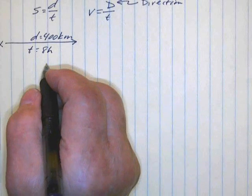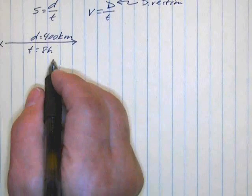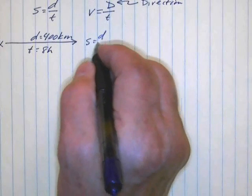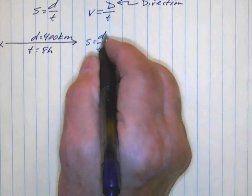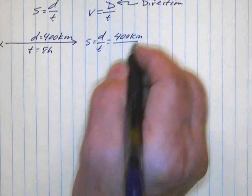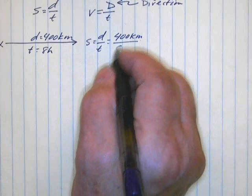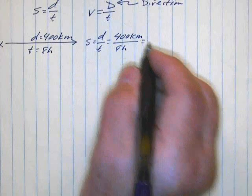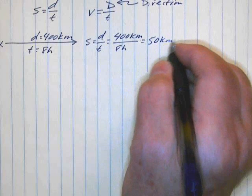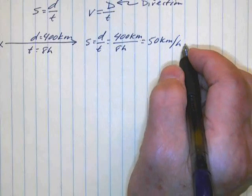Well, if we calculate the speed, we use the speed equation. Speed equals distance over time. That gives us 400 kilometers divided by a time of eight hours or 50 kilometers per hour.